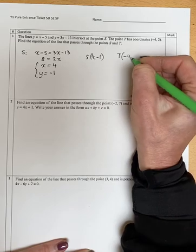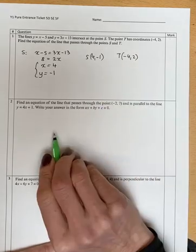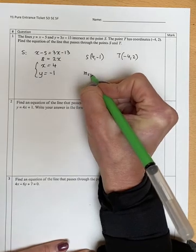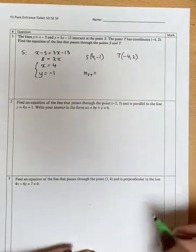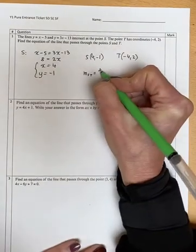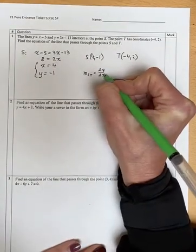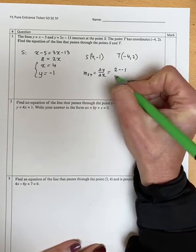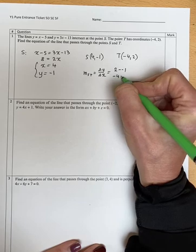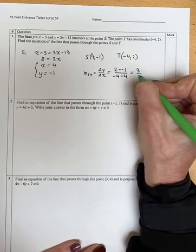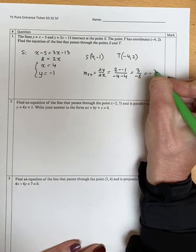Now we need to find the equation of the line passing through these two points, so we need the gradient. We've got to do the difference in y over the difference in x. So the difference in y, let's pick 2 minus minus 1, and the x is minus 4 minus 4, so that gives me 3 over minus 8, so it's minus 3/8.